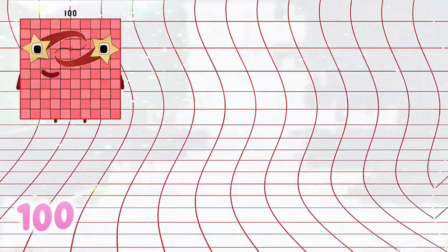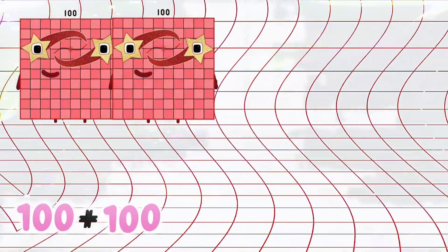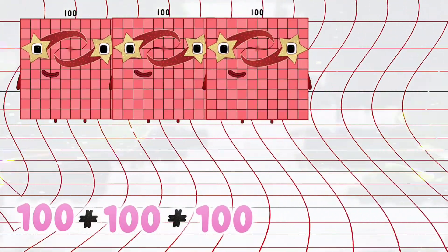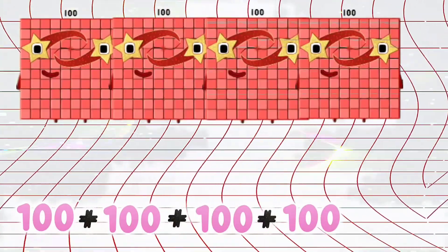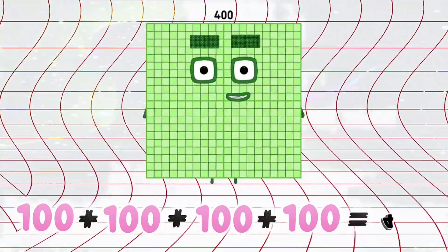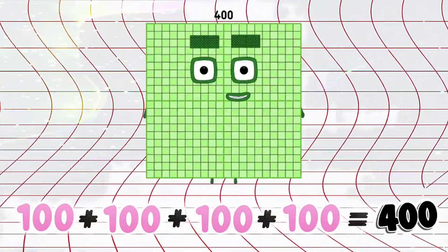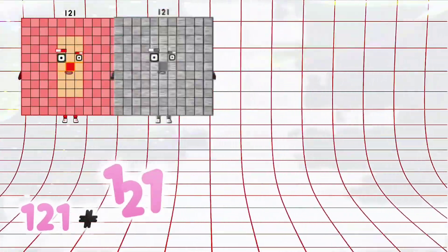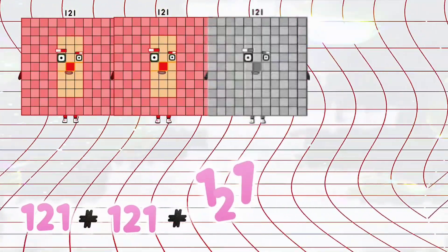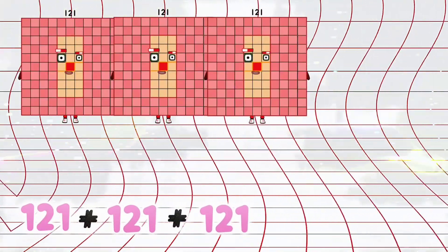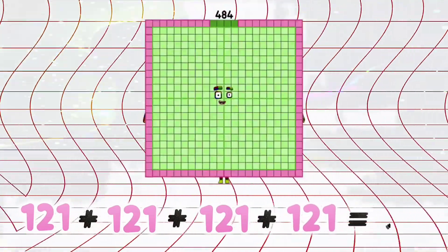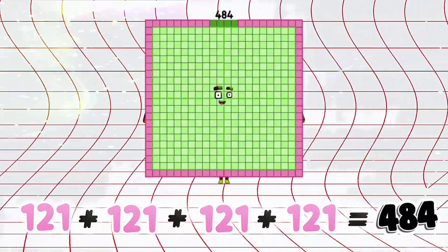100 plus 100 plus 100 plus 100 is equals to 400. 121 plus 121 plus 121 plus 121 is equals to 484.